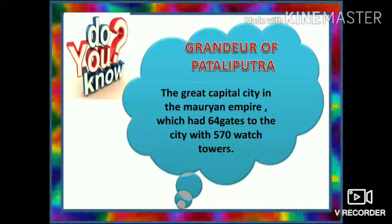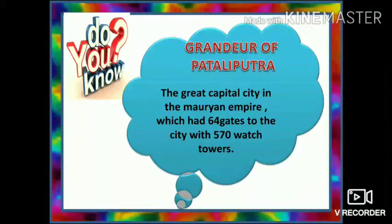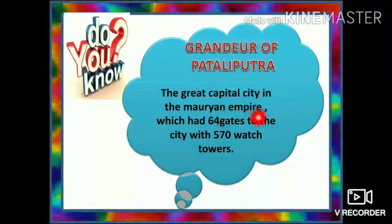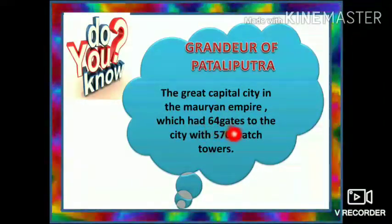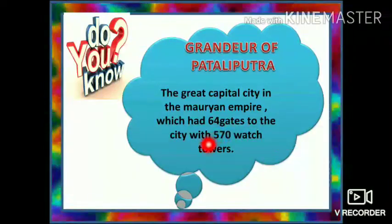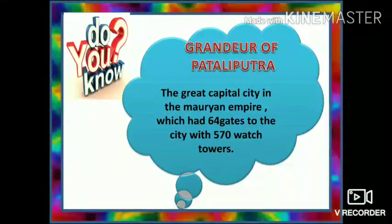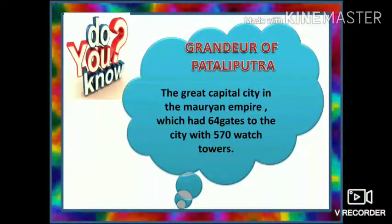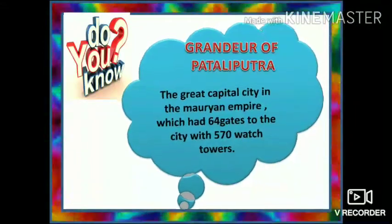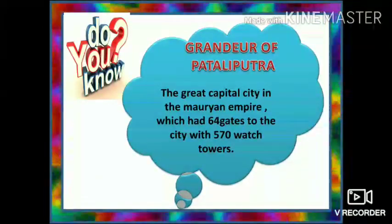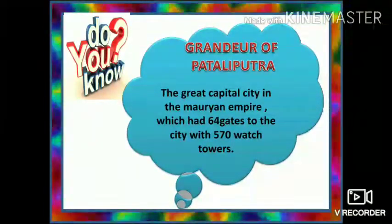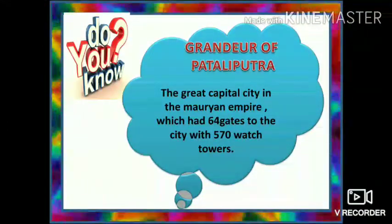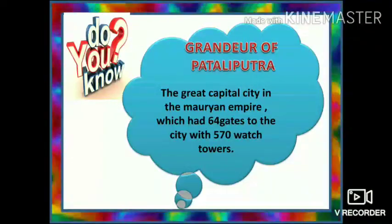During the Mauryan dynasty, art and architecture reached their highest level. The great capital city Pataliputra had 64 gates with 570 watchtowers. Emperor Ashoka is well known for his buildings, pillars, stupas and inscriptions. These monuments are very famous for their perfection. The pillars obtained from the archaeological site of Pataliputra describe their heritage and contribution towards art.